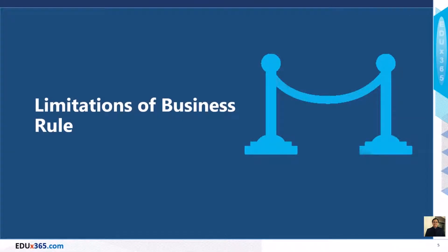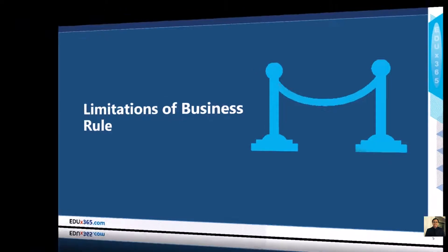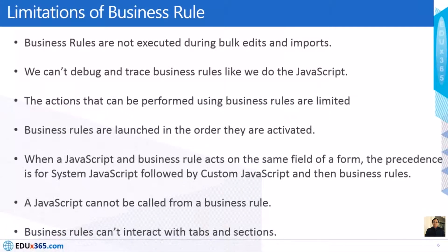Now let's understand the limitations of business rules. Business rules are not executed during bulk edits or reports. We can't debug or trace business rules the way we can with JavaScript. The actions that can be performed using business rules are also limited. Business rules are launched in the order they are activated. When a JavaScript and a business rule act on the same field, the precedence is: system JavaScript first, then custom JavaScript, then the business rule. A JavaScript cannot be called from a business rule, and business rules can't interact with tabs and sections.